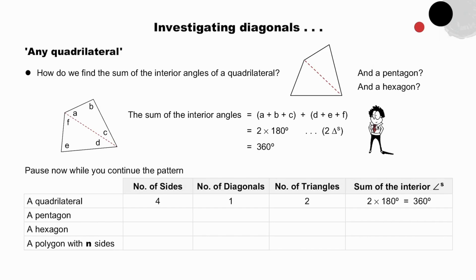Pause now while you continue the pattern as entered for the quadrilateral. The number of sides, the number of diagonals, the number of triangles, and the sum of the interior angles. Now do the same for a pentagon, a hexagon, and a polygon with n sides. Check your entries. Especially the final result for the polygon with n sides. The sum of the interior angles is n minus 2 times 180 degrees. For example, the sum of the interior angles of an octagon would be 8 minus 2 times 180 degrees.